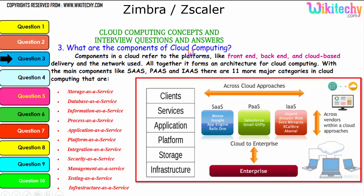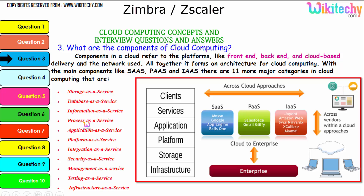Let's talk about the components of cloud computing. Components in a cloud refer to platforms like front-end, back-end, and cloud-based delivery, along with the network used. Altogether they form an architecture for cloud computing. The main components are Software as a Service, Platform as a Service, and Infrastructure as a Service. There are 11 major categories in cloud: storage as a service, database as a service, information as a service, process as a service, application platform, integration, security, management, testing, and finally infrastructure. These are additional services associated with the three major services to form cloud computing.